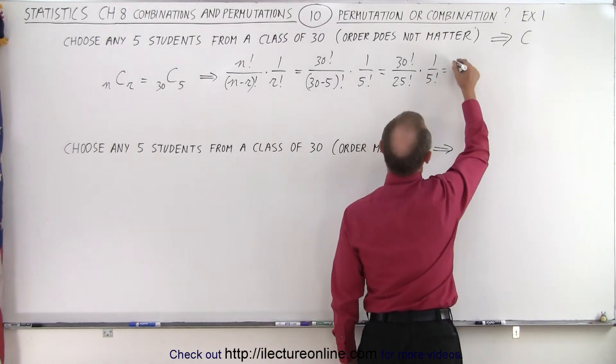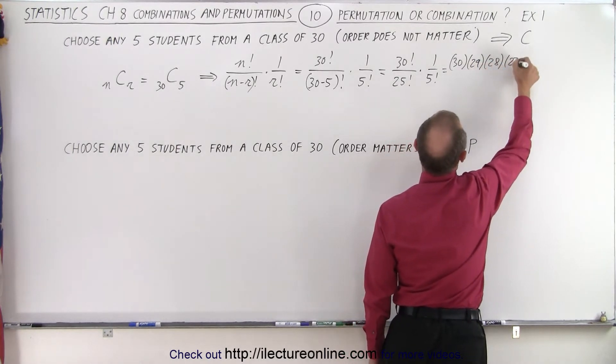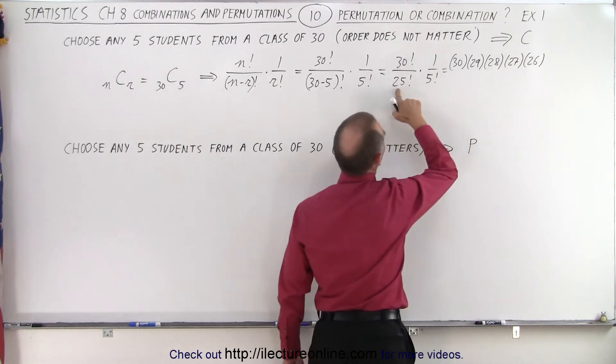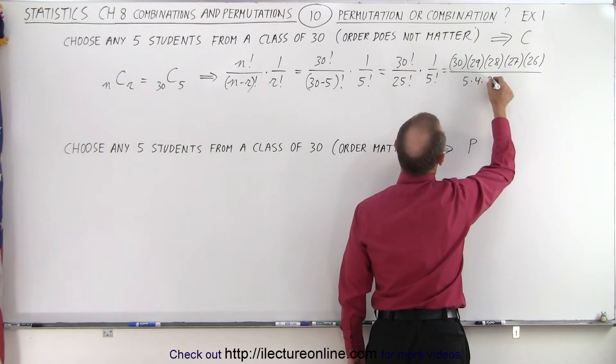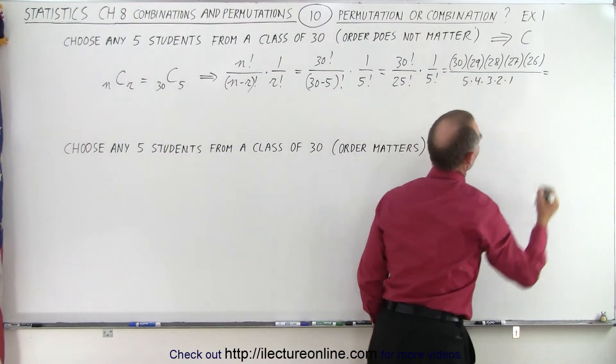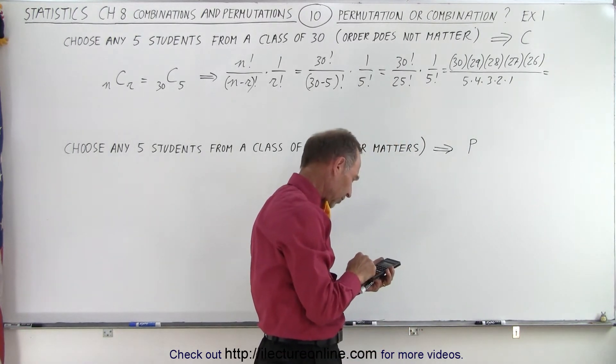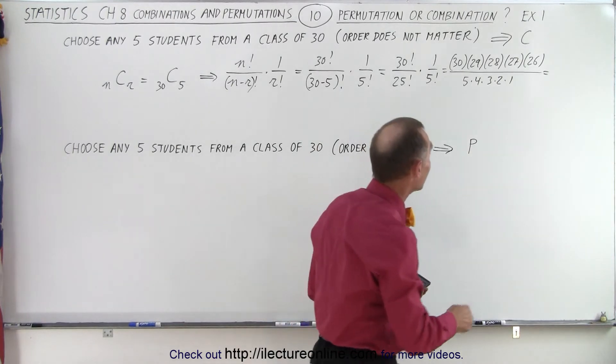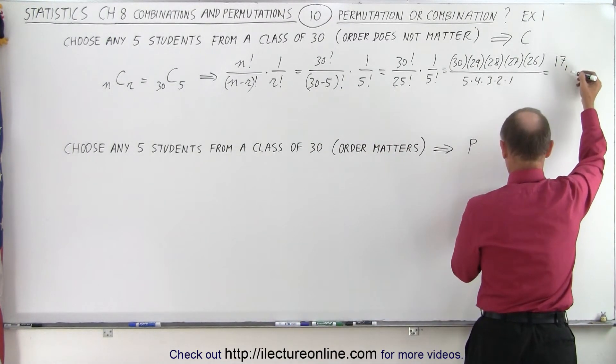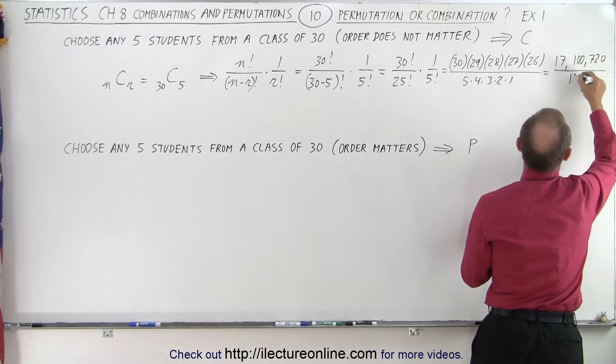And this then turns into 30 times 29 times 28 times 27 times 26. Anything 25 and under cancels out, divided by 5 times 4 times 3 times 2 times 1. And so this is going to be, let's see here, 30 times 29 times 28 times 27 times 26, that would be 17 million. So 17,100,720 divided by 5 factorial, which is 120.